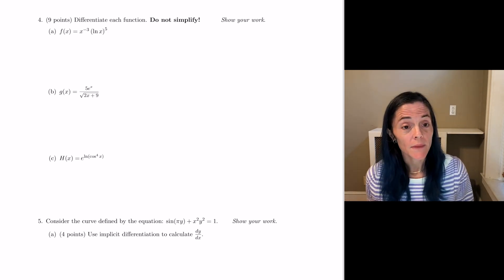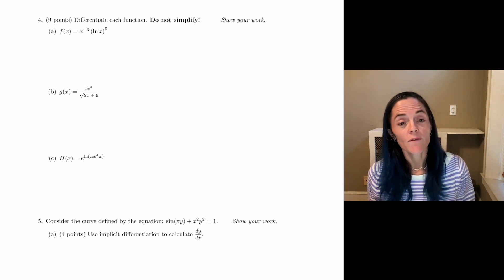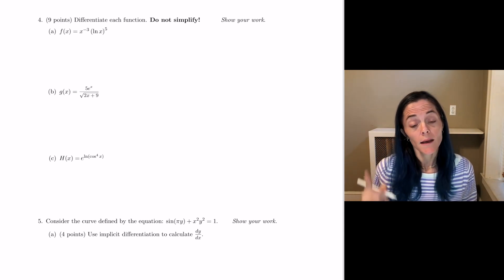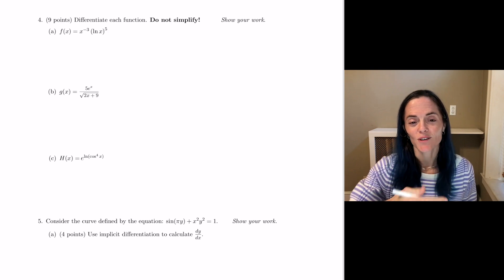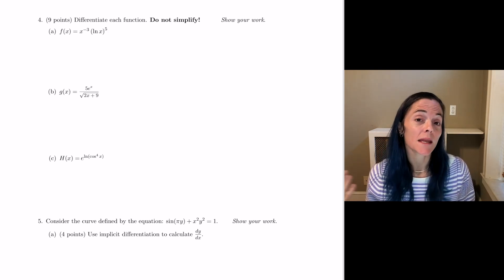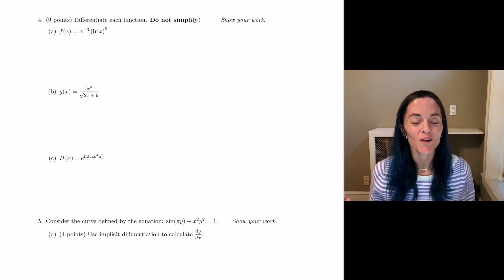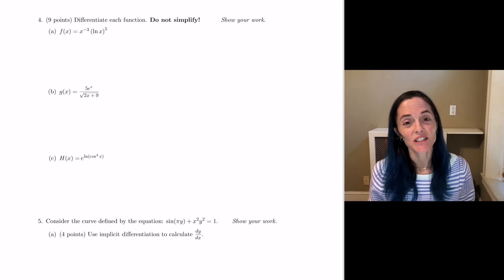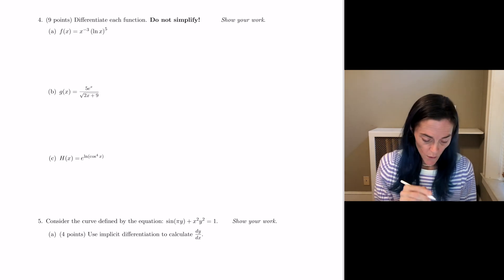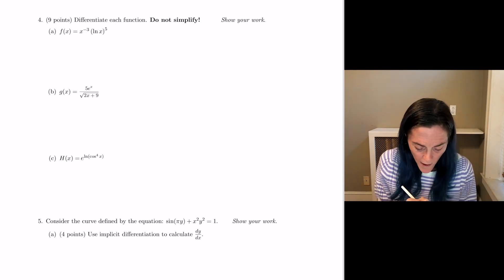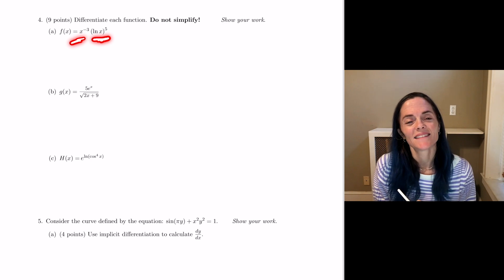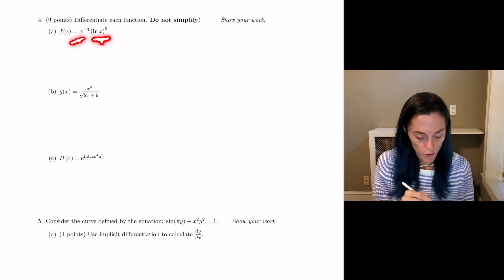Okay, well first question we have three parts, differentiate each function, do not simplify. You see we have a natural log, e to the x, we have a trig function, but then we have many rules here, product rule, quotient rule, chain rule, things like this. Wonderful. Okay, and a, you see I have one function times another. So fundamentally, letter a is a product rule.